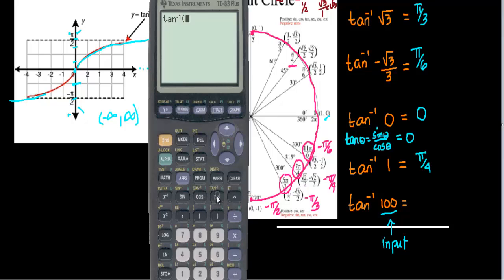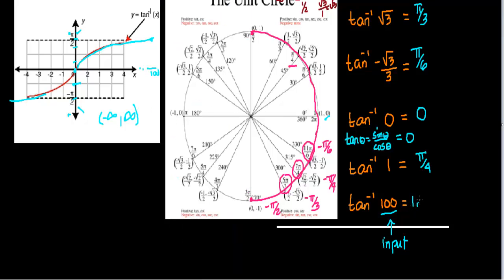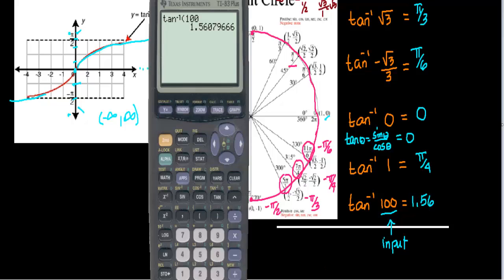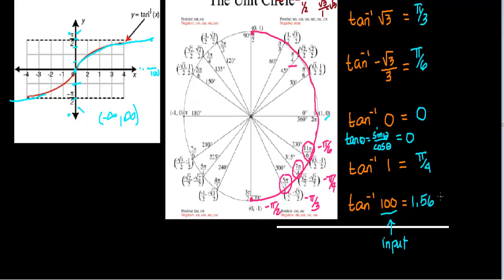Let's do tangent inverse of 100 on the calculator. That equals approximately 1.5608. For this value you need your calculator. The key point is that for inverse tangent, the input can be any number — very big, very small, or negative. You can use your calculator to find the angle in radians such that when you take the tangent of that angle, you get 100.